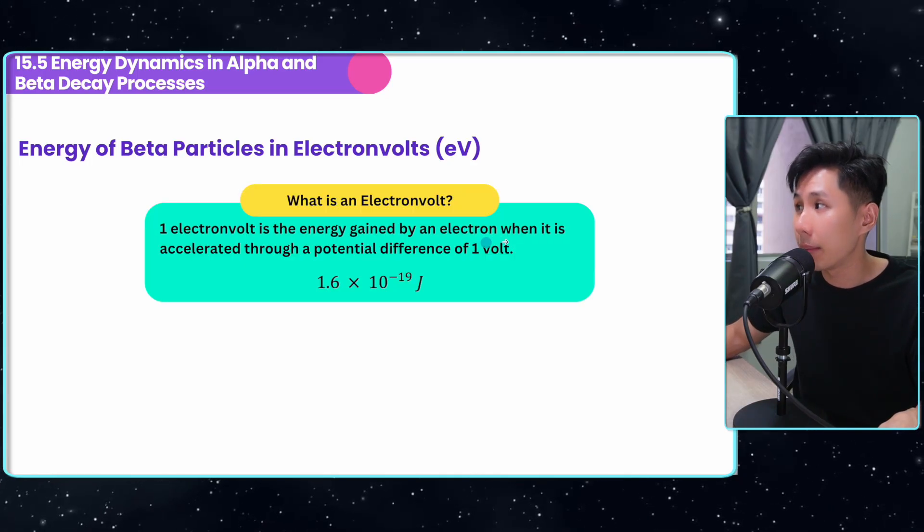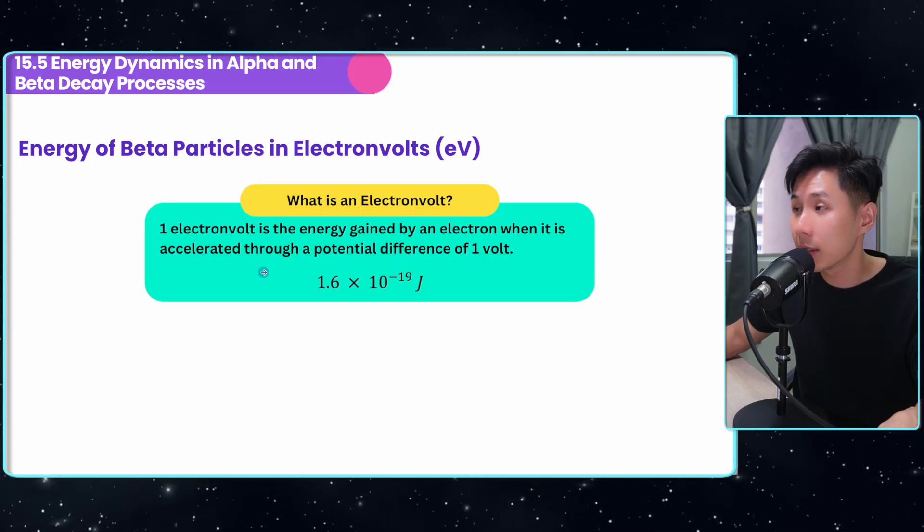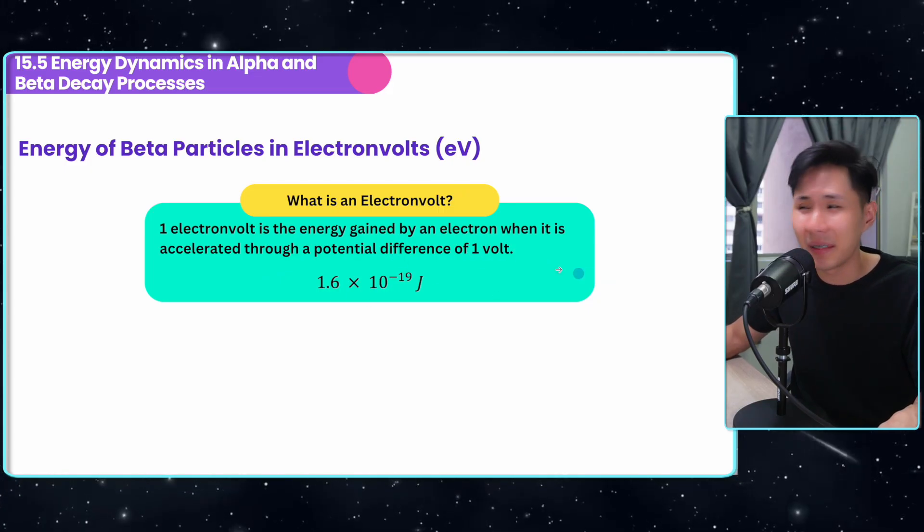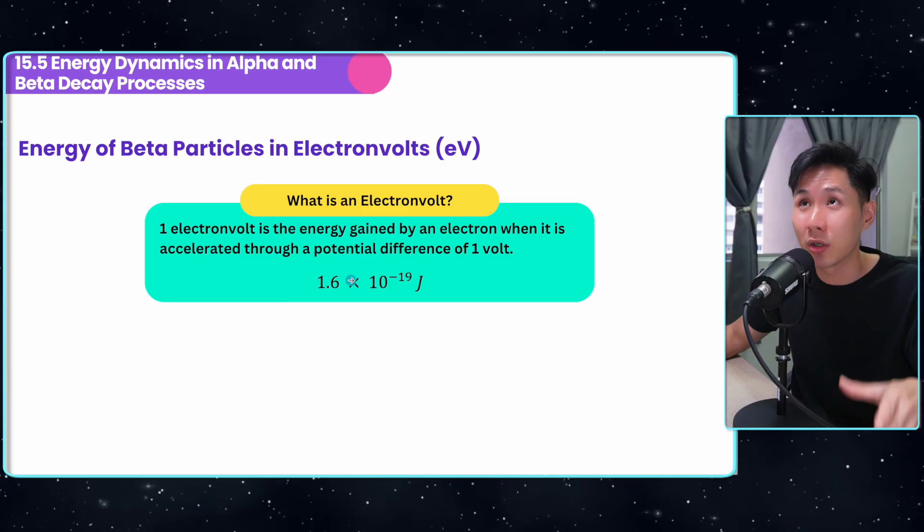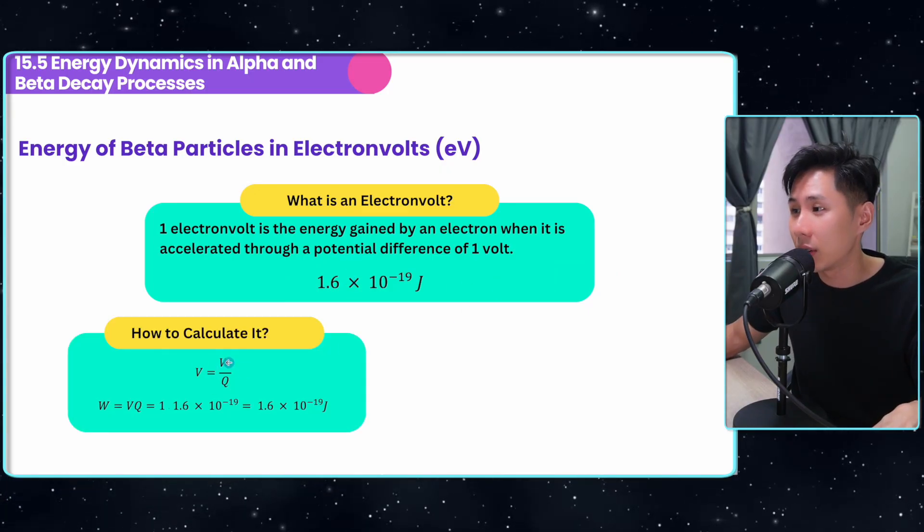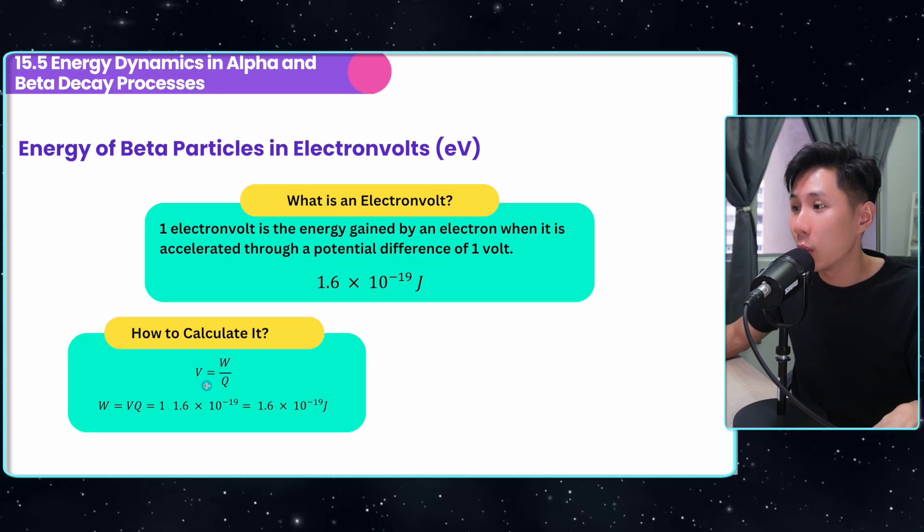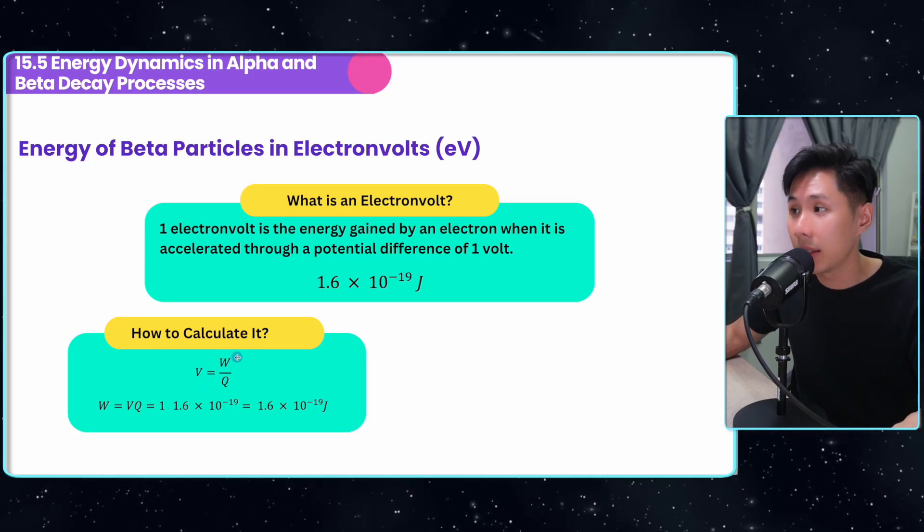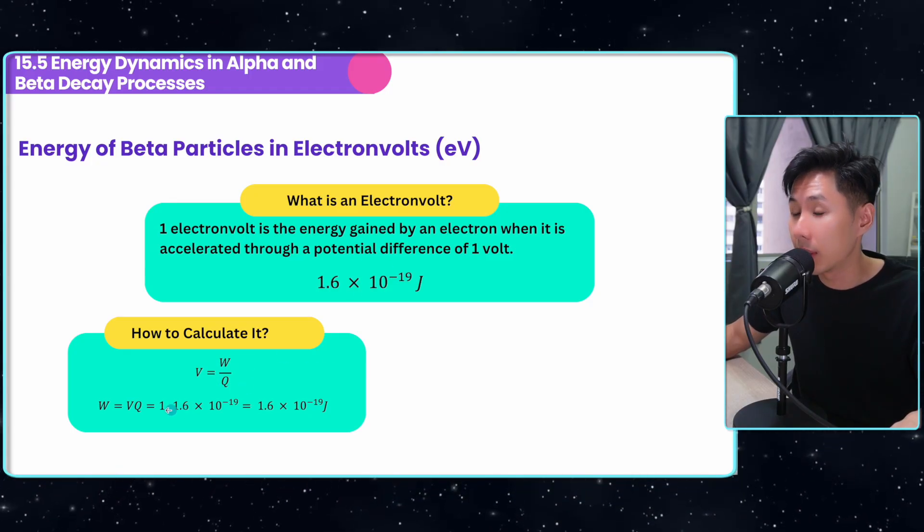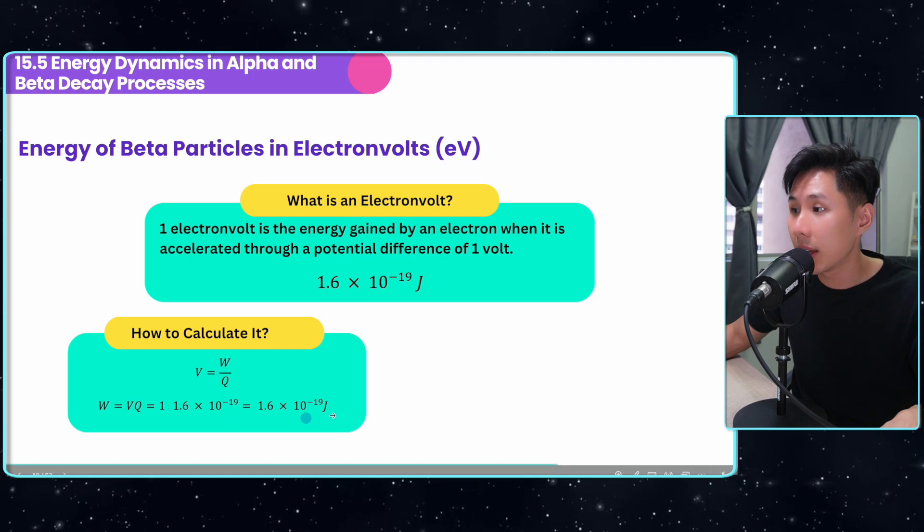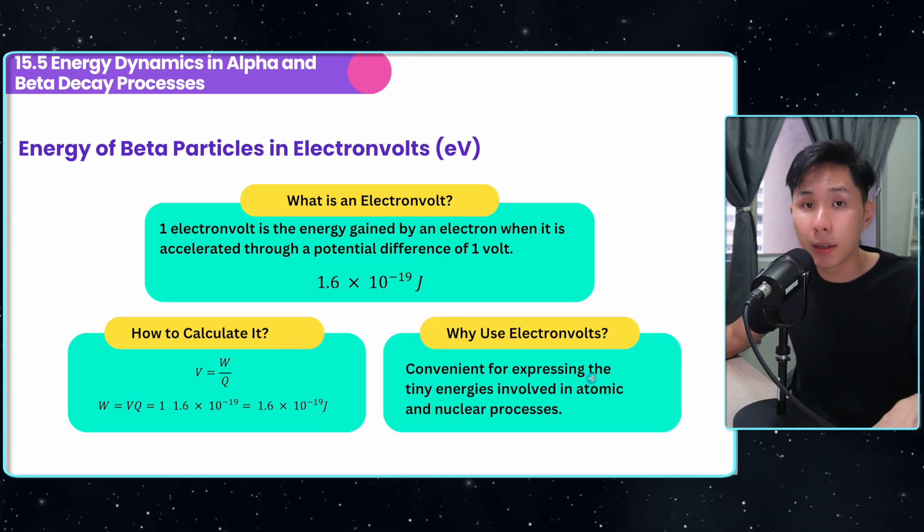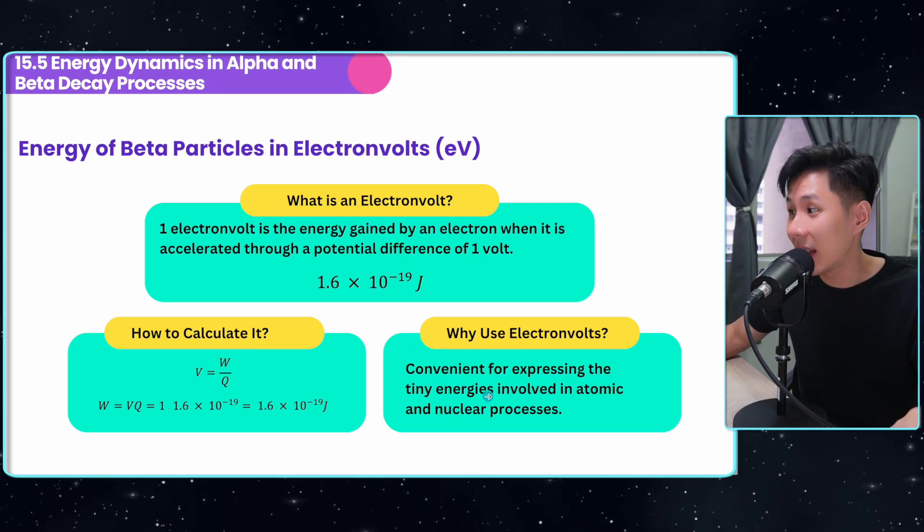An electron volt is the energy gained by an electron when it is accelerated through a potential difference of one volt. That's basically the amount of a single charge, 1.6 × 10^-19 J. The way we calculate is V = W/Q. So what is the energy gained by the electron, which is the work done when it is accelerated through a potential difference of one volt? If you rearrange the formula, you will get the same value.